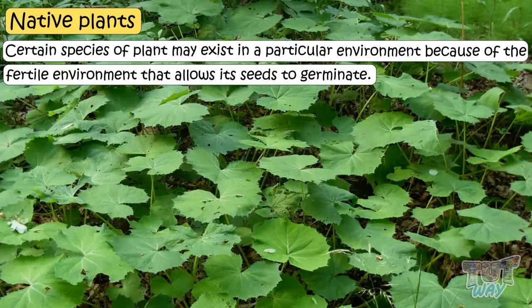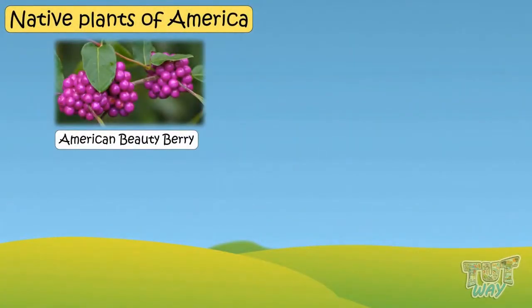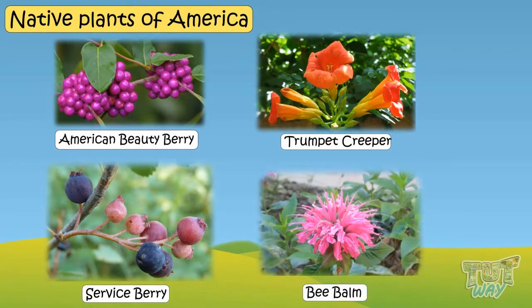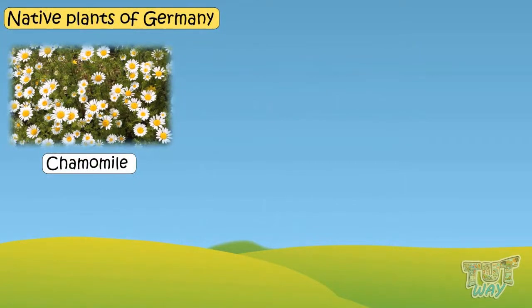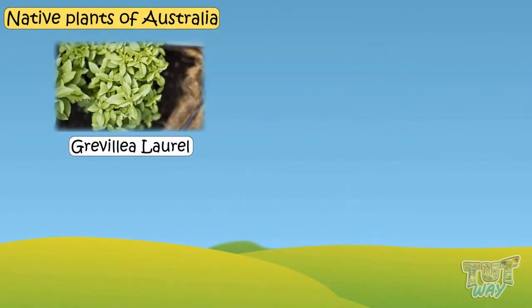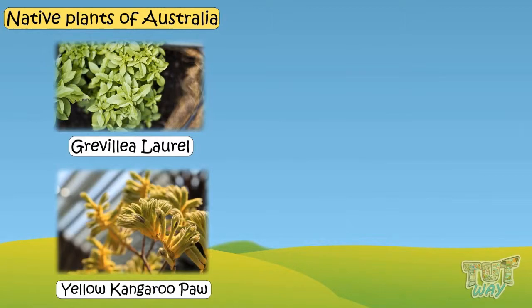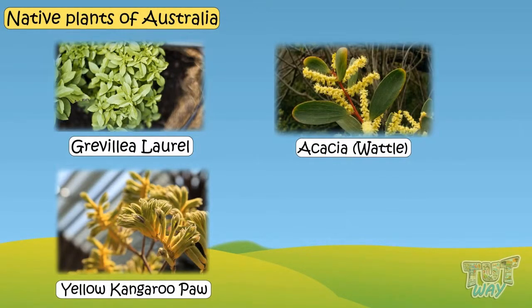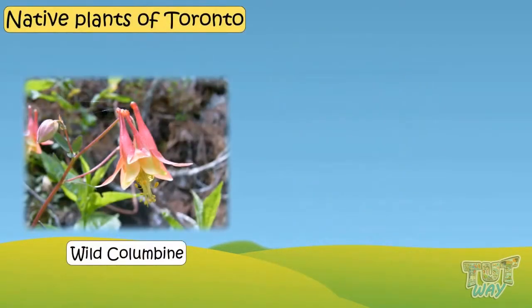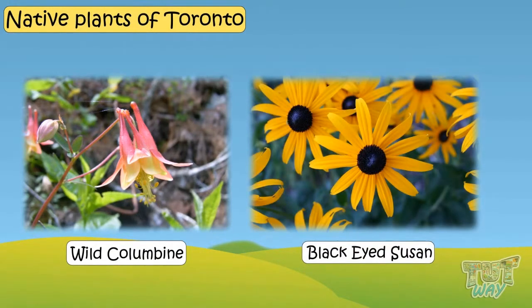Let's see some examples. American Beauty Berry, Service Berry, Trumpet Creeper, and Bee Balm are some plants native to America. Camomile, Cornflower, and Silver Birch are native to Germany. Grevillea, Laurel, Yellow Kangaroo Paw, Acacia, and Red Flowering Gums are native plants of Australia. Wild Columbia and Black-Eyed Susan are native plants of Toronto.